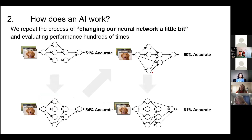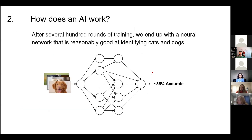We repeat this process of training, evaluating, tweaking — hundreds and hundreds, if not thousands of times. For any one person this would be an impossible task, but for a computer it only takes a couple of hours or, with enough processing power, a couple of minutes. Each time the structure changes, it gets slightly better at identifying cats and dogs. After hundreds of rounds of training and evaluating, we end up with a network that is 85% accurate and can process hundreds of images in just a couple of seconds.